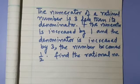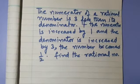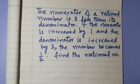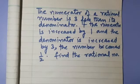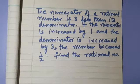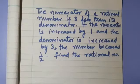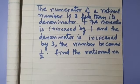The numerator of a rational number is 3 less than its denominator. If the numerator is increased by 1 and the denominator is increased by 3, the number becomes 1/2. Find the rational number.